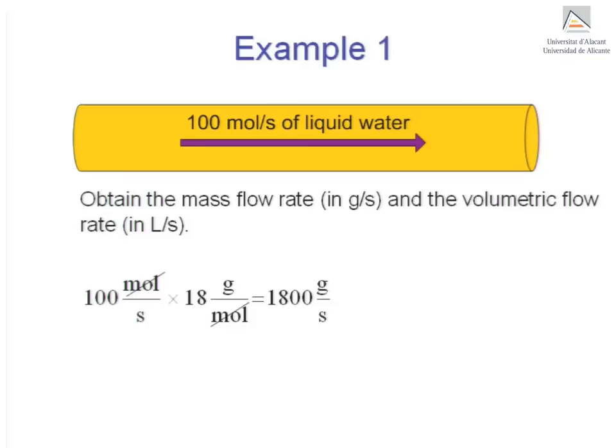We use the molecular weight of water to convert to mass flow rate. Multiplying the molar flow rate, 100 moles per second, by water's molecular weight, 18 grams per mole, immediately gives us the mass flow rate. Always include units when showing your working. This ensures that the units are consistent and cancel when necessary. In addition, it also serves as a safeguard against calculation errors, as it makes it easier to spot mistakes.